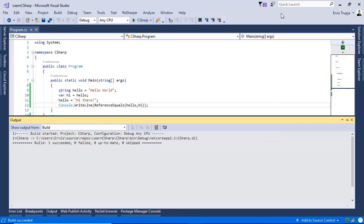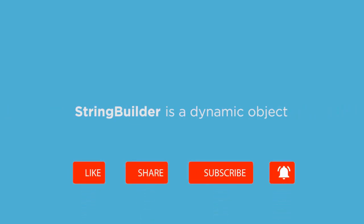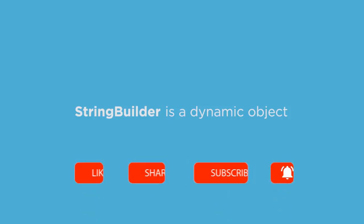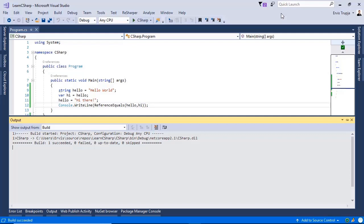To solve this problem, C# introduced StringBuilder. A StringBuilder is a dynamic object that allows you to expand the number of characters in a string. It doesn't create a new object in memory, but dynamically expands the memory to accommodate the modified string.